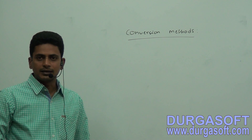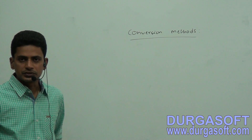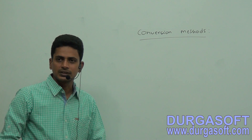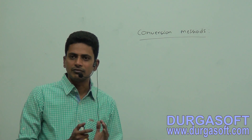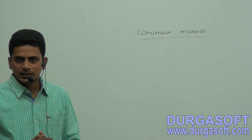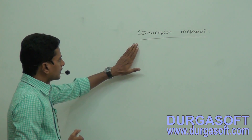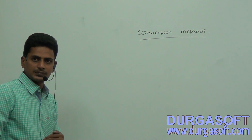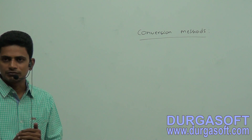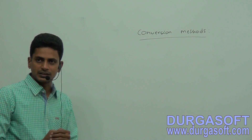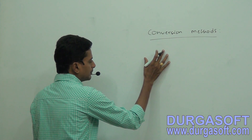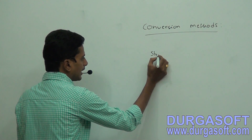Today I'm going to discuss conversion methods in C# .NET. Conversion methods are used to convert from one data type to another data type. For example, suppose a string value is there and I would like to convert that string value into an integer value — for that purpose we use conversion methods.